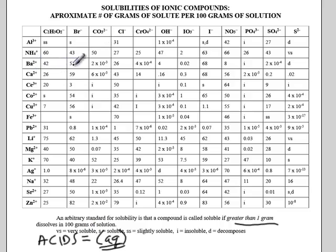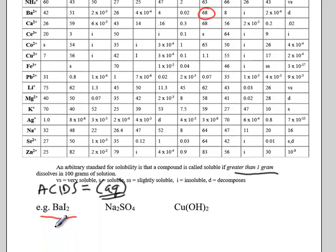So, if we find barium cation, iodide anion, we find a value of 68. So, barium iodide with a value of 68 is greater than 1, so this is soluble in water. That's aqueous.